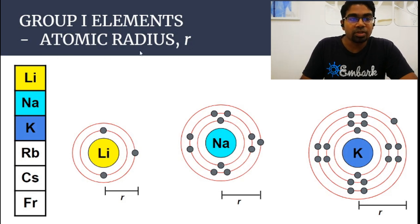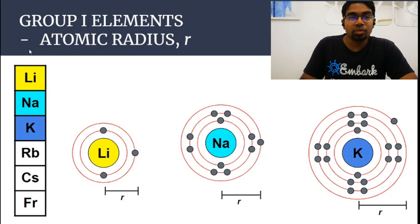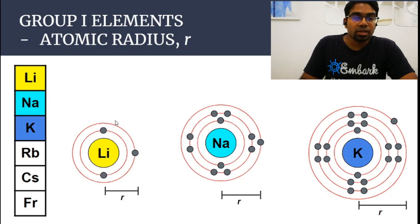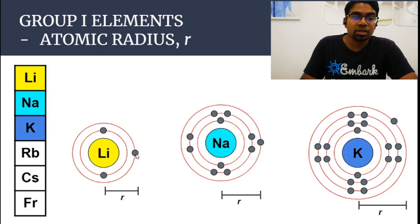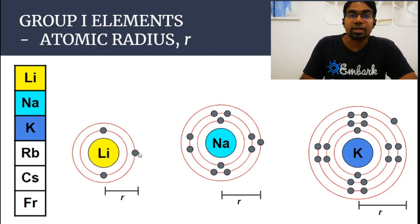Atomic radius is important no matter which group you have studied. Atomic radius is the distance from the center of the atom to the end of the atom, which is the outermost shell — the valence shell. This is known as the atomic radius. It is the radius of the atom.